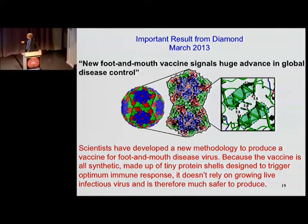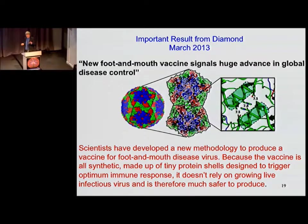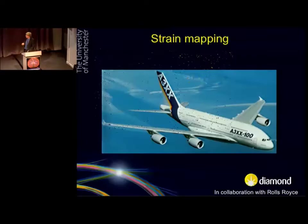The problem is that without anything inside, the shell isn't very stable and tends to break down. So what the team at Diamond did was look inside and work out the structure — identifying the weak points and strengthening them. They managed, from understanding the structure using x-rays, to make a safe vaccine that didn't degrade and from which you could tell whether an animal had been vaccinated or was actually infected with the virus.